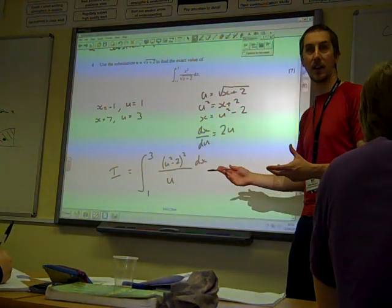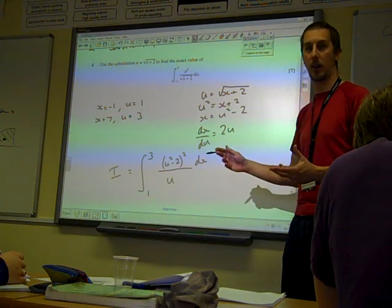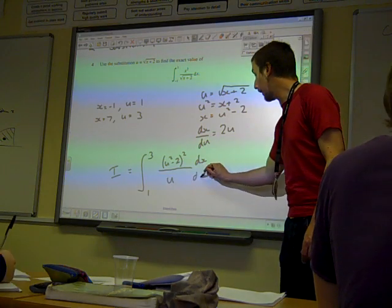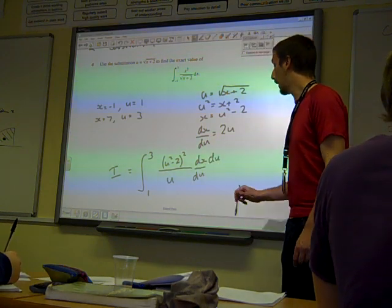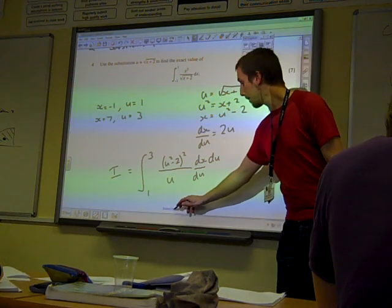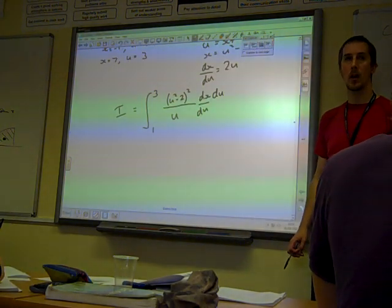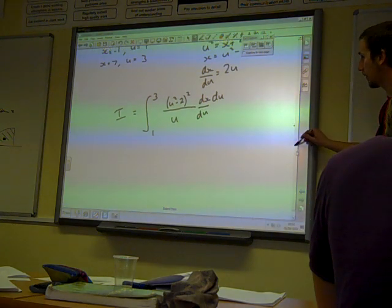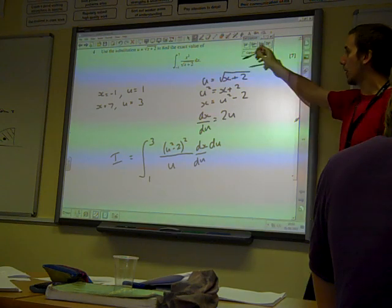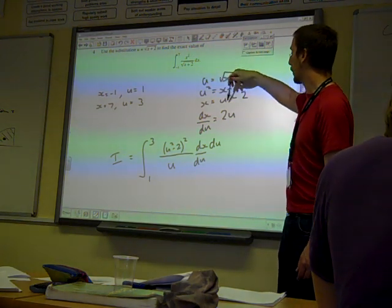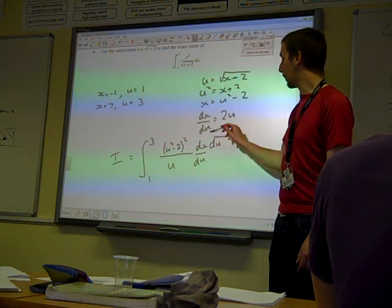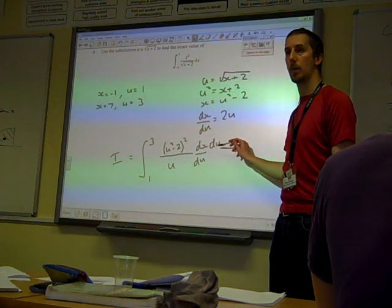And now in order to turn it into B, in terms of U, we're going to have to multiply top and bottom by DU. So we've got DX by DU. Does that make sense to everybody? We've done the replacements. X squared is replaced with the square of that. Root X plus 2 is U. DX, we've written DX by DU.